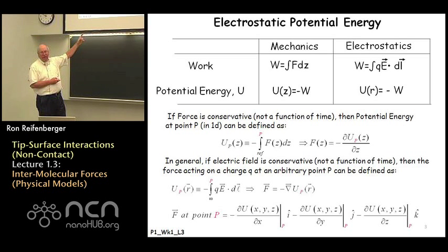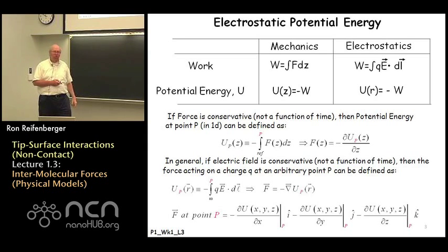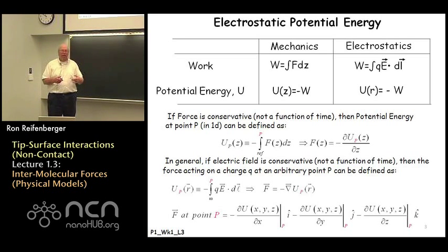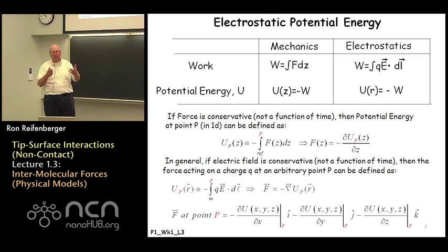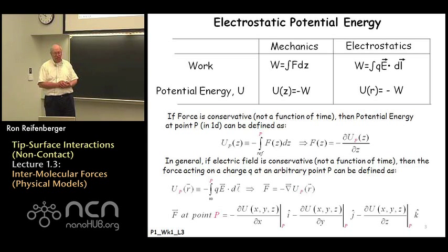By way of notation, I try to use the symbols small i, small j, and small k to represent unit vectors in the x, y, and z direction. I think this is common notation, but there are certainly other choices that can be made. Throughout these lectures I will try to stick to the i, j, and k unit vector notation.